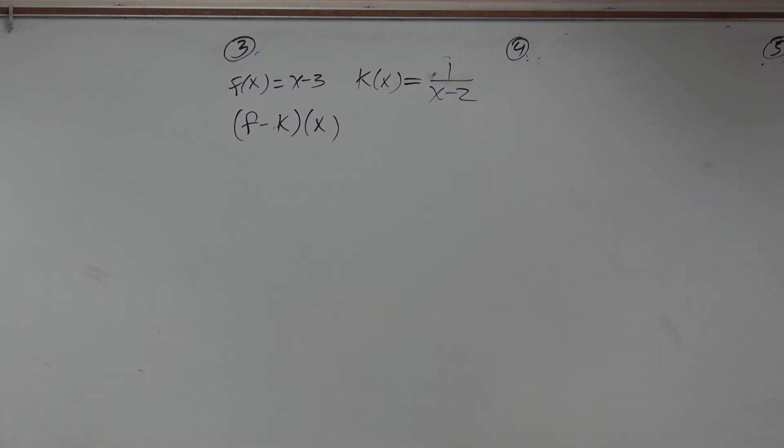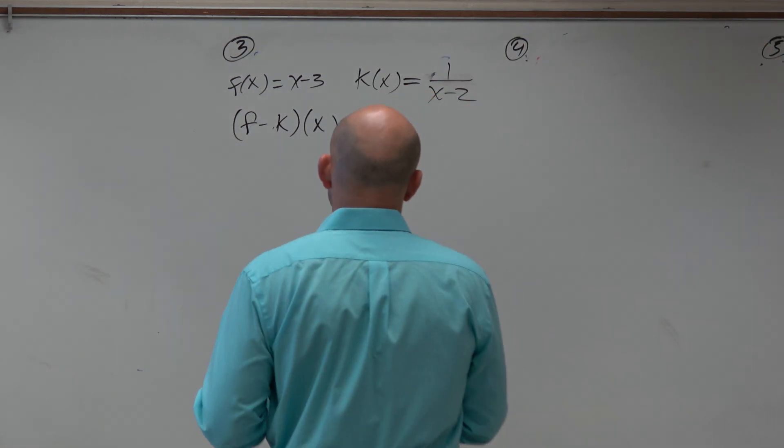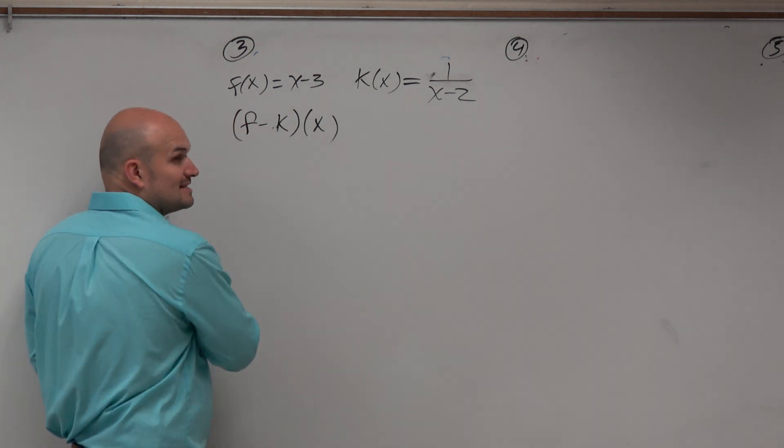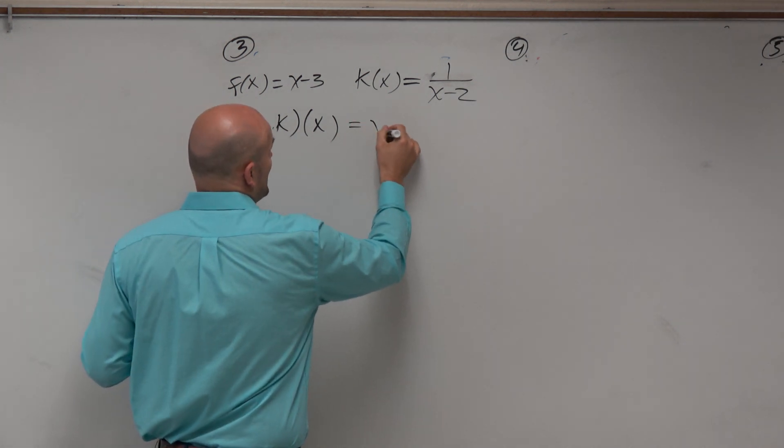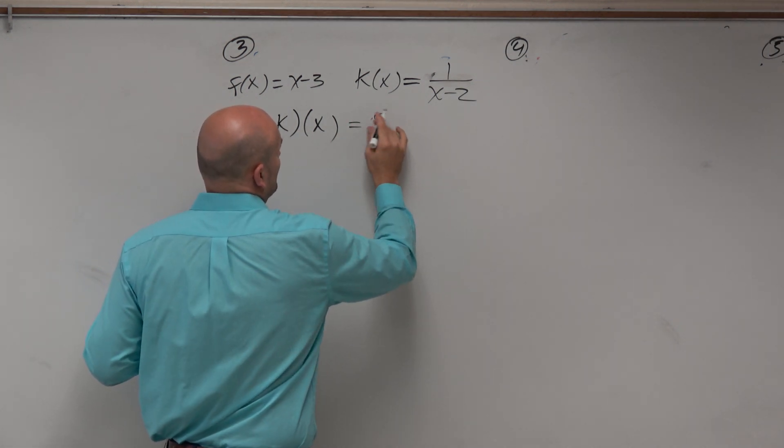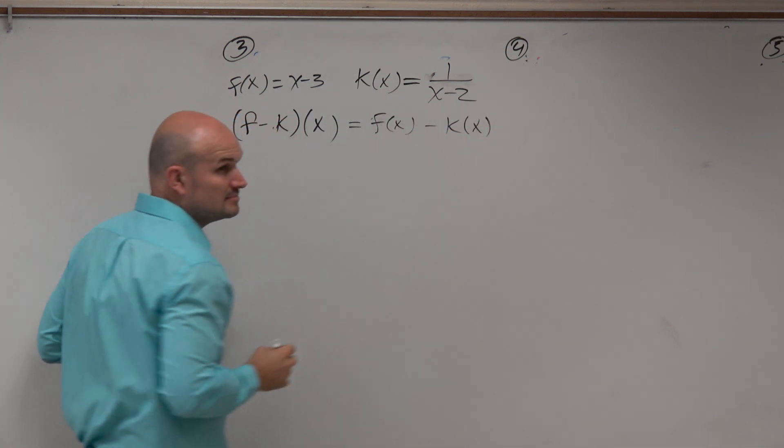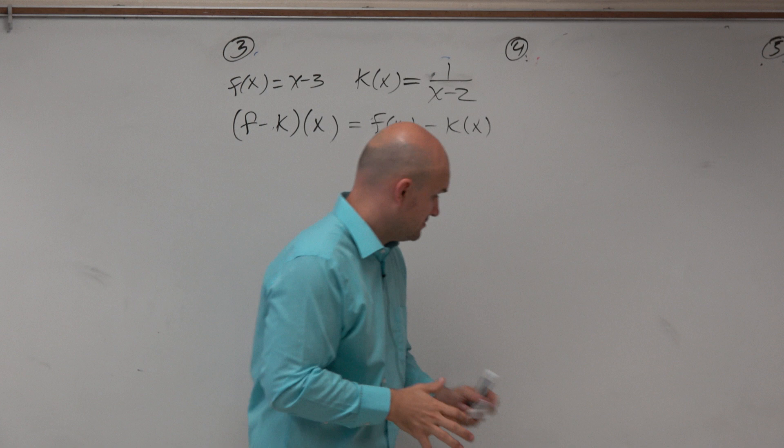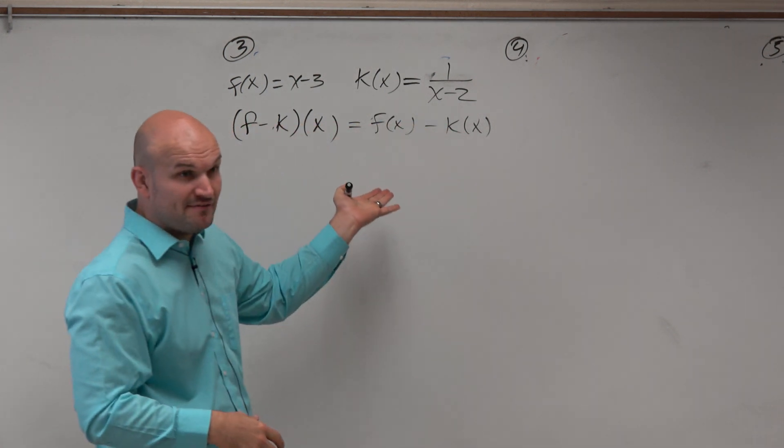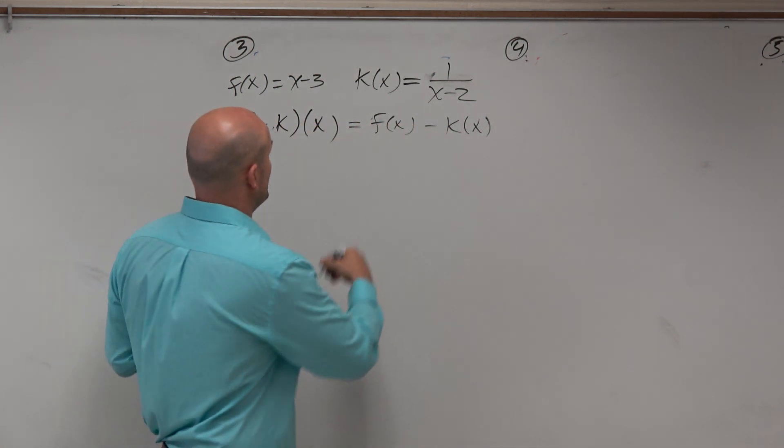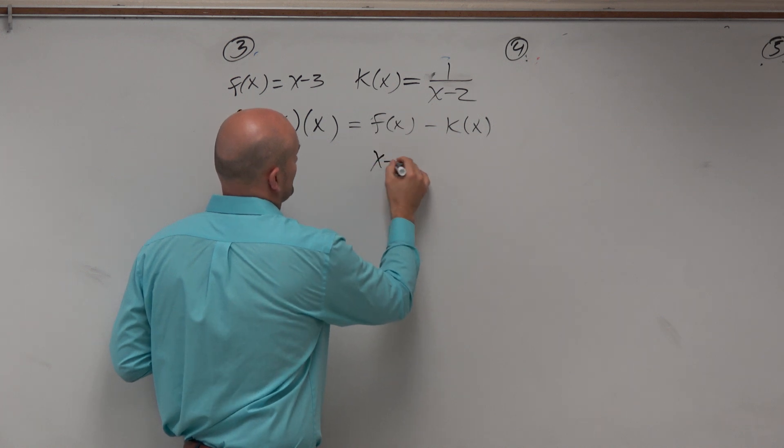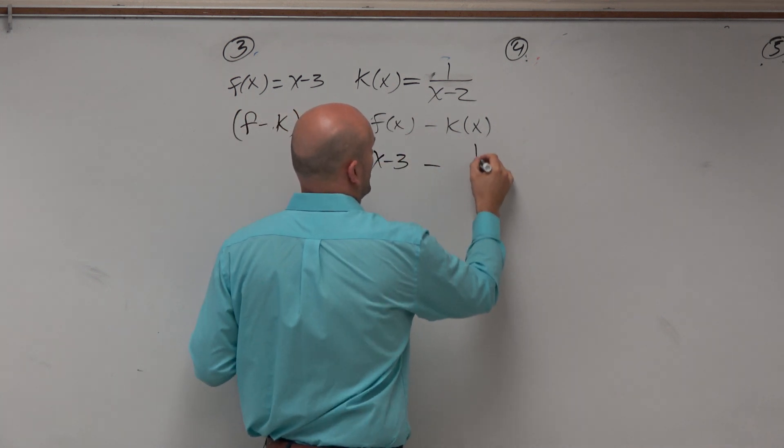In this example, if we need to subtract this function, we need to understand that f minus k of x is just telling us to subtract f of x minus k of x. That's all it's asking us to do. So do we have k of x and f of x defined? Of course we do. So this is x minus 3 minus 1 over x minus 2.